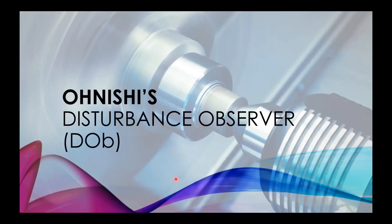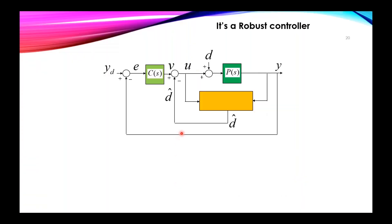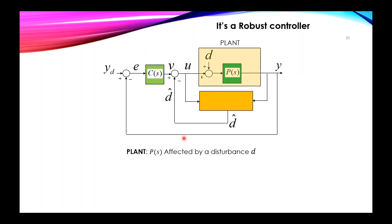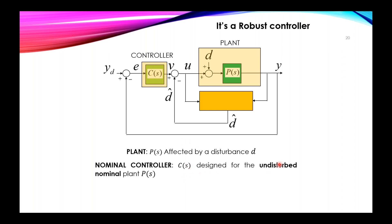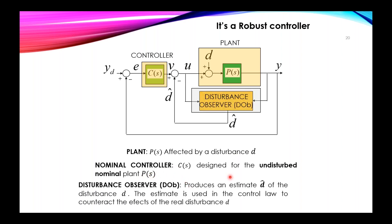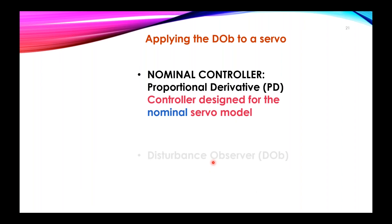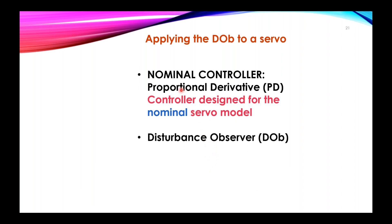Now we talk about the disturbance observer (DOB). This is a kind of robust control methodology in which a plant P(s), affected by a disturbance D, is controlled using first a nominal controller designed for the undisturbed nominal plant model P(s), complemented by a disturbance observer which produces an estimate D-hat of the disturbance, and this estimate is used in the control law to counteract the effects of the real disturbance D. To apply the DOB to a servo, the nominal controller will be a proportional-derivative (PD) controller designed for the nominal servo model, which corresponds to a double integrator.